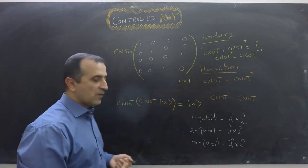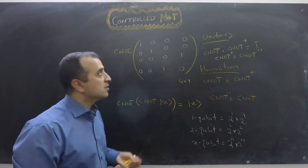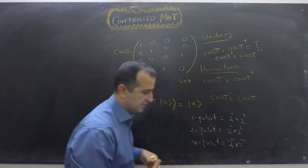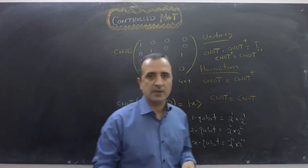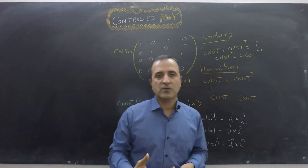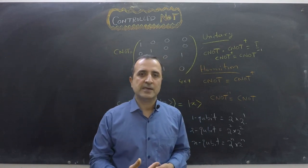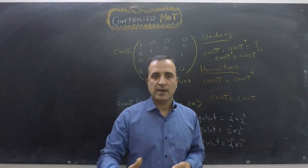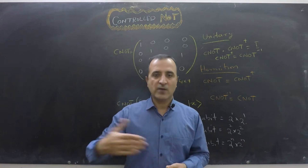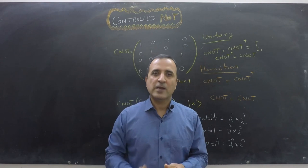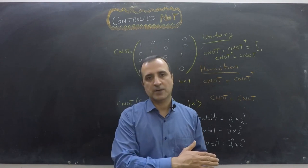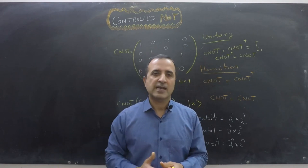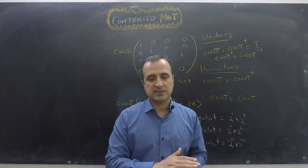Why is it called the control-NOT gate? In its simple form, the first qubit acts as the control bit. If the first qubit is 1, it flips the second qubit. If the first qubit is 0, the second qubit remains unchanged.